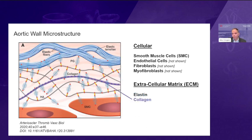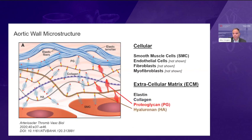Collagen stays wavy or crimped during the early part of the cardiac cycle and only becomes uncrimped towards the higher points of loading. It doesn't have the same elastic nature as elastin and is more responsible for overall structural integrity of the aortic wall. Proteoglycans make links with hyaluronan and other extracellular matrix components and smooth muscle cells, creating a compressible aggregate that smooths out stress transmission through the wall and assists with mechanical transduction.